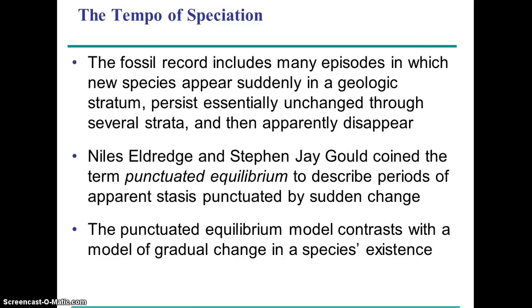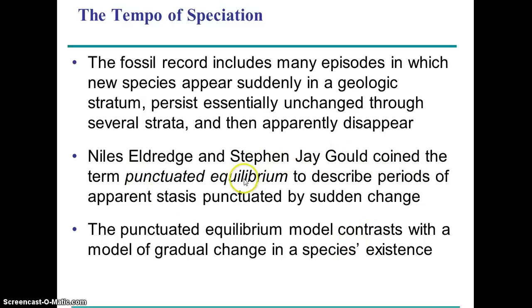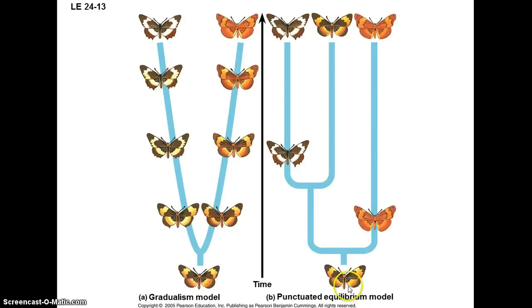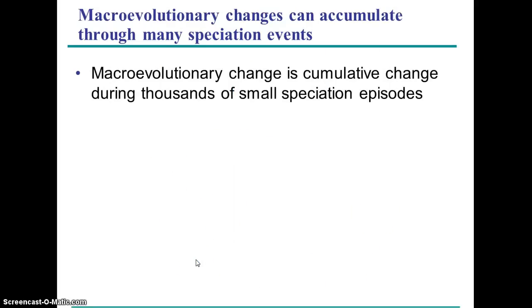The rate at which speciation occurs: on the left is the gradualism model — how Darwin envisioned it — where species would slowly change through time, one turning into two. But the work of paleontologists Eldridge and Gould, when they looked at the fossil record, led them to develop the punctuated equilibrium model: they saw rapid change over a short period of time, followed by long periods of stasis with not much change. In reality, you probably get both, depending on the particular group and how quickly the environment is changing. Where the environment changes rapidly, you get rapid speciation; where it's more stable, you might get the gradualism model.